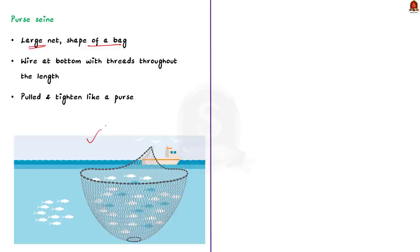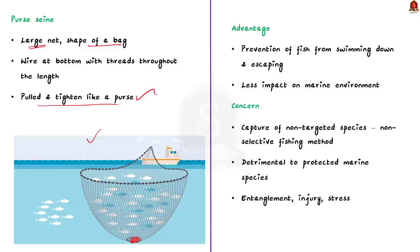The bottom of the net has a wire along the weights, and this wire is threaded throughout its length. This wire can be pulled and it tightens the net like a purse, trapping the fish inside — that is why it is called purse seine fishing. It is nothing but a large wall of net deployed around an entire school of fish. The main advantage is that it prevents fish from swimming down and escaping, because the bottom is closed like a purse. Purse seine nets are set near the ocean surface and do not touch the seafloor, so their impact on the marine environment is very small.